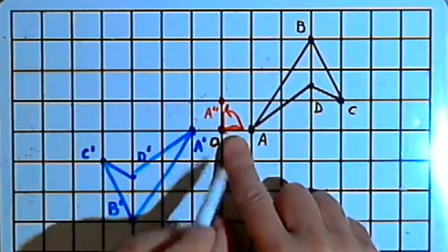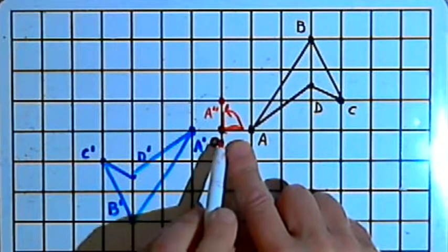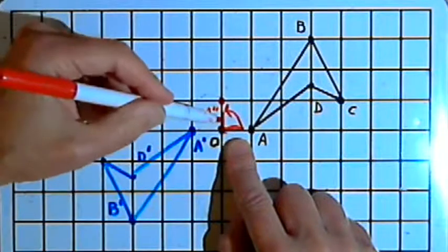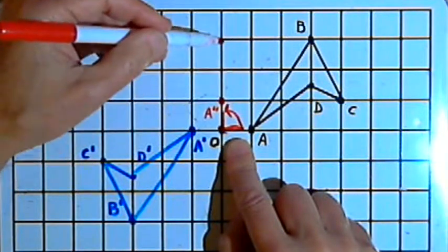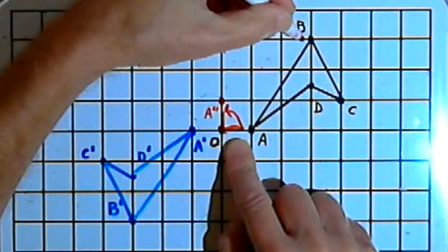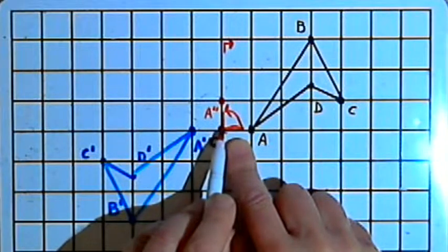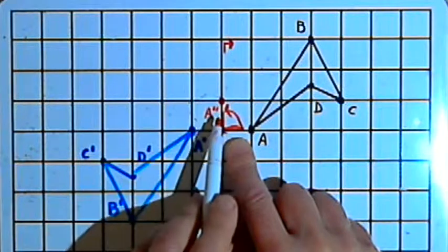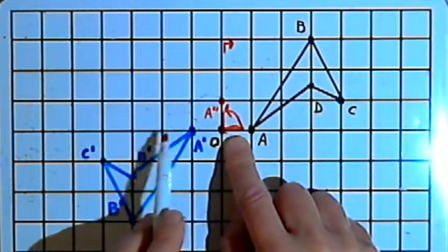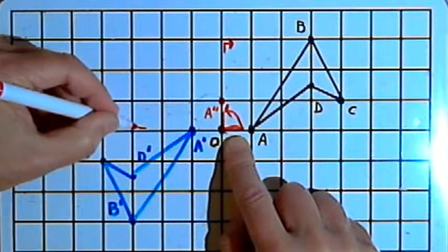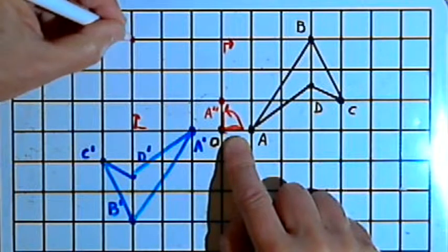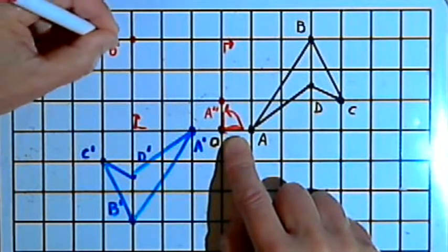To get to point B, I start at point O, the center of rotation. I face towards the top of the page, go forward three units, then make a right turn and go forward three more units. So going back to point O, instead of facing up I'll turn 90 degrees counterclockwise and use the same directions — go forward three units, make a right turn, and go forward three more units. That gives me point B double prime.